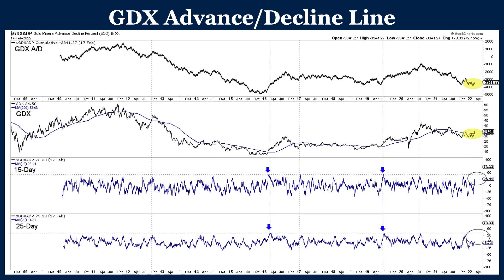The last indicator is the advance-decline line, which deals with gold stocks. We're looking at the advance-decline line in GDX. In this chart, we have GDX's advance-decline line — the thick black line at the top is a cumulative reading. Below that we have GDX. And in the bottom half, we have a 15-day and a 25-day rate of change for the advance-decline line — that's another way to look at it, measuring the rate of change rather than the cumulative.